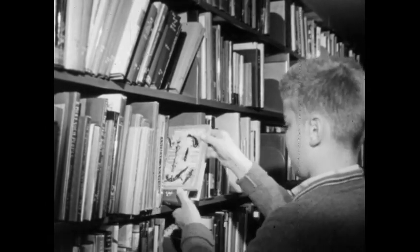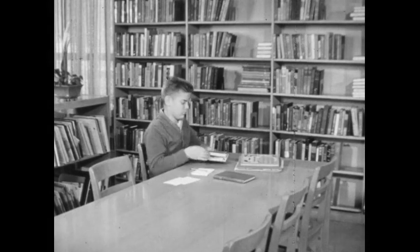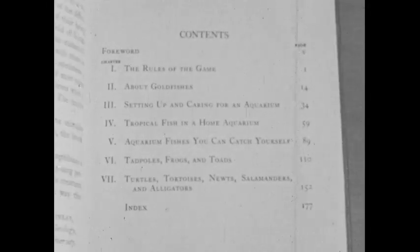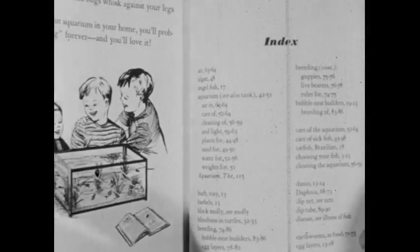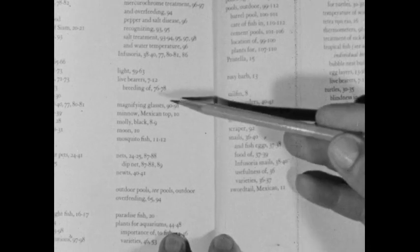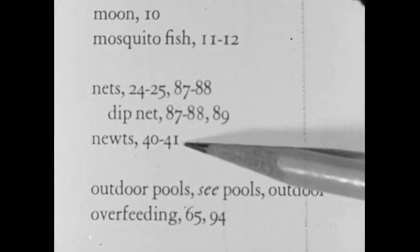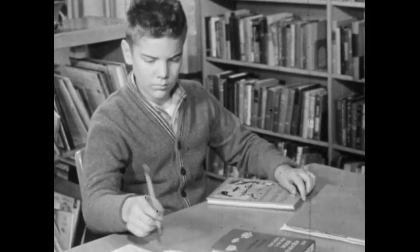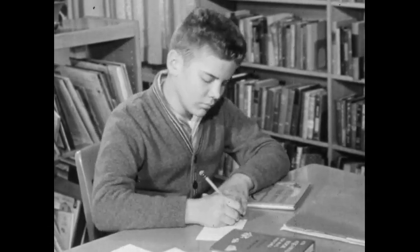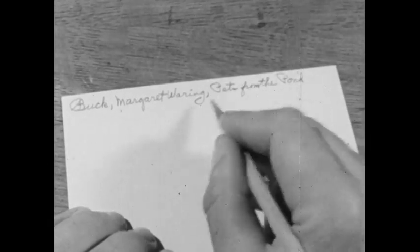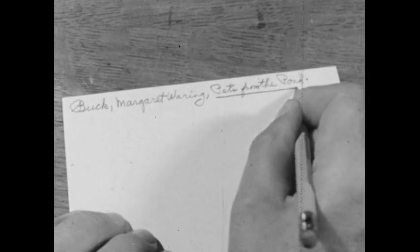Ted found several books he thought he could use. As Ted looked in each book, he checked the table of contents, where the chapter headings listed the main topics in the book. At the back of the book, he looked in the index to locate his particular subject. Newts were on pages 40 and 41. Ted made notes of the important facts he found in each book. At the top of each note card, Ted wrote the name of the author, underlined the title of the book, and then wrote the page his information came from.